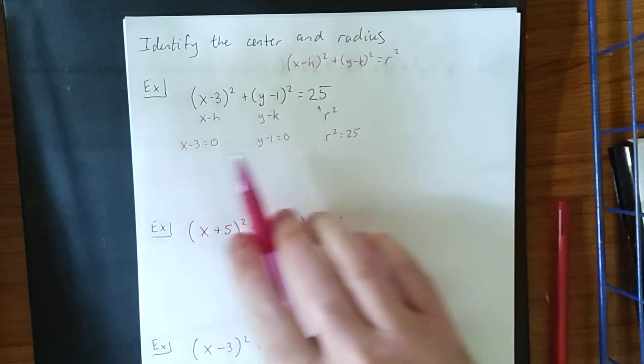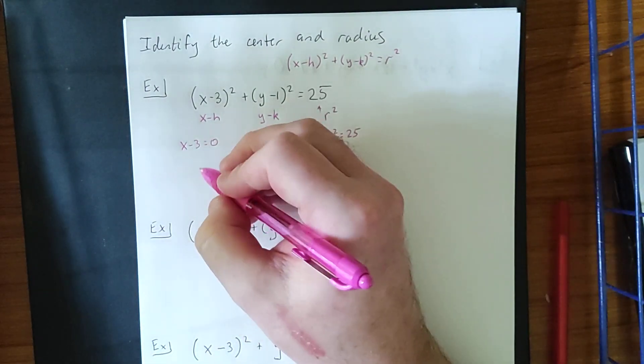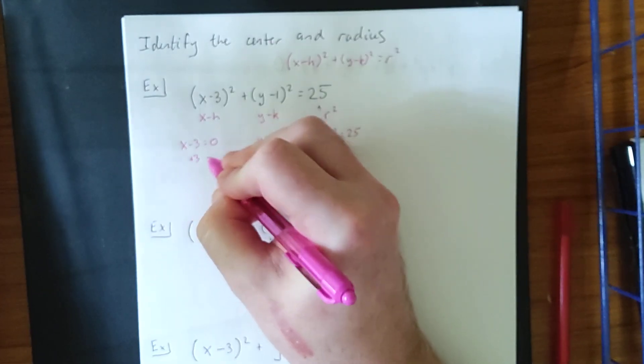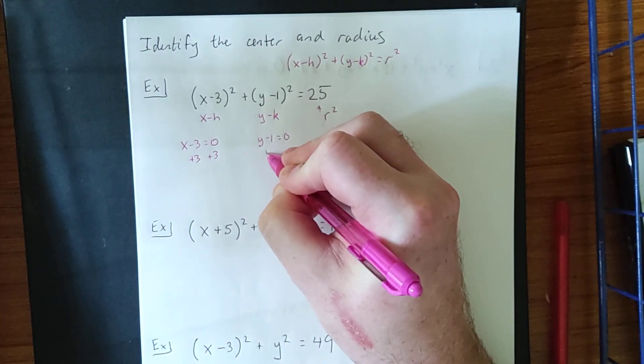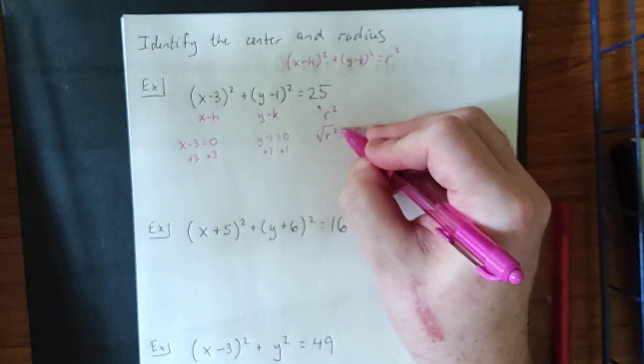When you solve for x and solve for y and solve for r, that'll give you your center and your radius. So, one step of algebra to solve for x, one step of algebra to solve for y, and one step of algebra to solve for r.